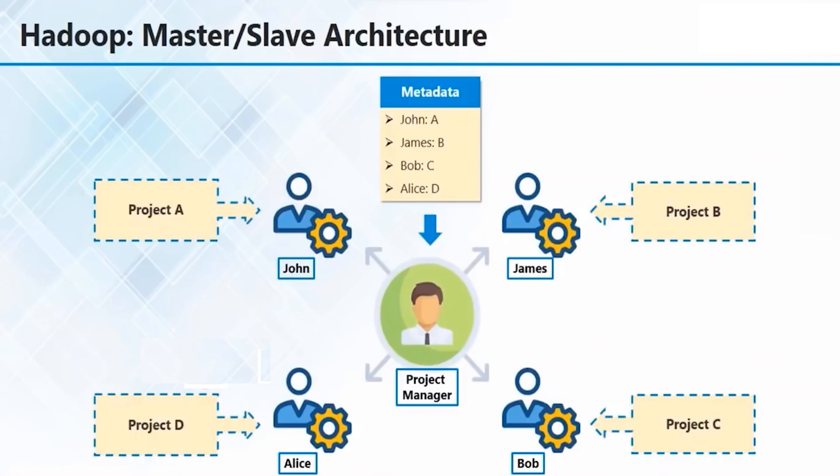The project manager thinks of a plan. He goes to John and appreciates his excellent work. John is a bit suspicious — wondering why the manager is appreciating so much today. Then the project manager tells John to take up project C as well. John replies that he is already fine with his project and has a lot of work to do, so he doesn't think he can take project C.